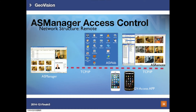This is the network structure for remote access of AS Manager. You can use ASWeb via browser or ASRemote installed on other PCs, connecting through TCP/IP to AS Manager to view access logs. We also have a mobile application called GV Access, available for free on Android Google Play Store or the iOS App Store, which lets you connect directly to AS Manager from your mobile phone.